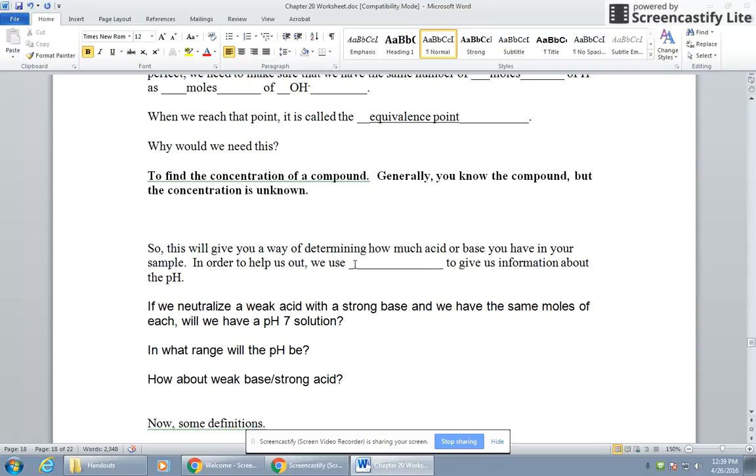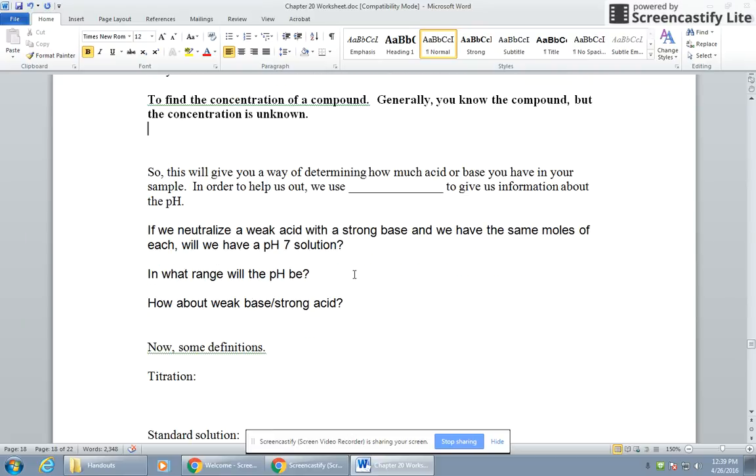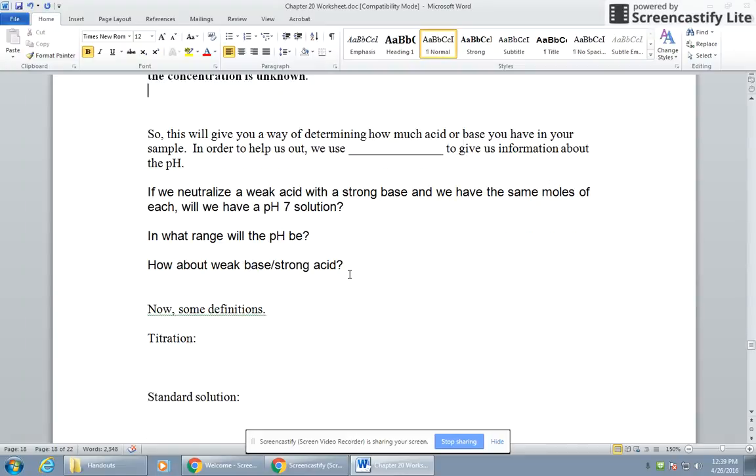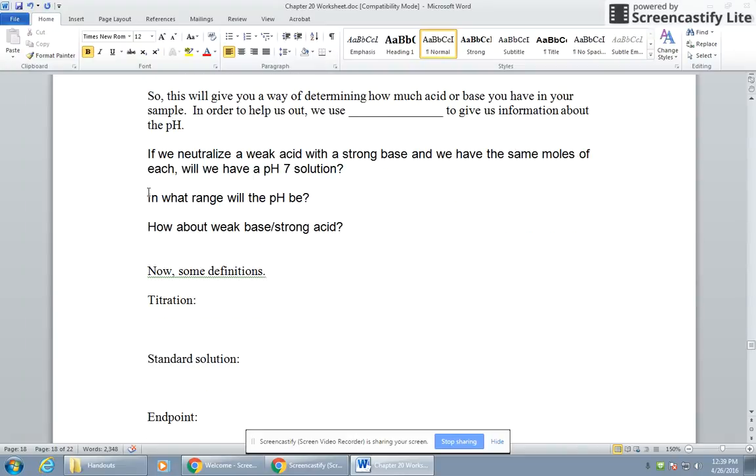Generally you know the compound, but the concentration is unknown. This will give you a way to determine how much acid or base you have in your sample. In order to help us out, what could we use to give us information about the pH? What could we visibly use to see whether our stuff is acidic or basic or neutral?